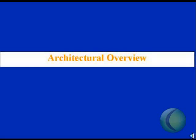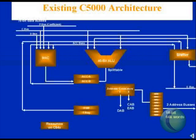The architectural overview will begin by reviewing the C5-4X architecture. This is now a well-known architecture, characterized by two input data buses — the C and D bus — which feed a MAC unit and contains two accumulators. In the 5-4X, we call them Accumulator A and Accumulator B. We'll see how that changes in the 5-5X. We also have one 40-bit ALU, which may be split into two 16-bit ALUs.